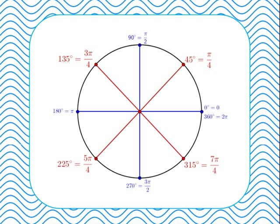We can divide the circle further by splitting each of those regions in half, giving units of 45 degrees or π/4 — it's simply about being able to count. Moving 45 degrees anti-clockwise from the positive x-axis gives 45 degrees or π/4. A further 45 degrees is 90 degrees, or 2π/4, which simplifies to π/2.